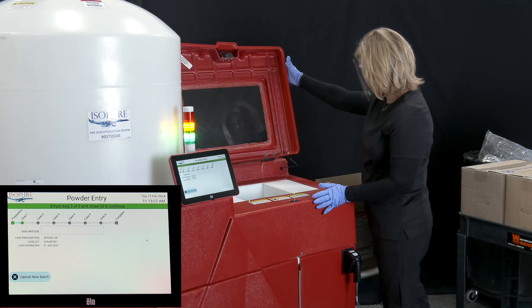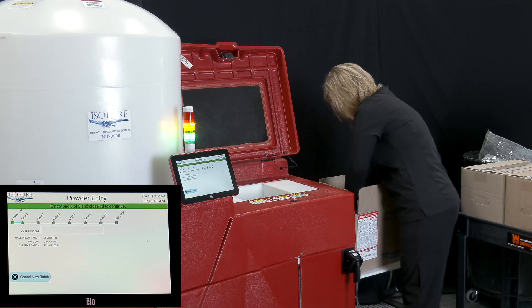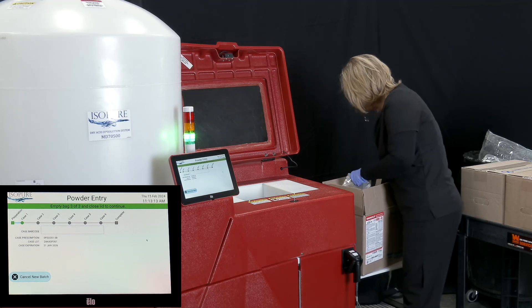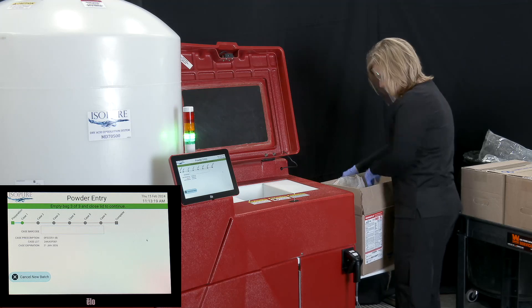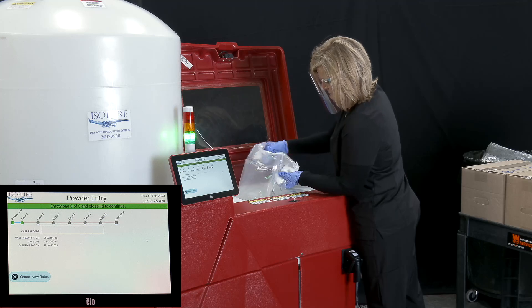Acumix counts the number of cases scanned as well as the number of times the lid is opened and closed. This helps to ensure that the correct number of dry acid bags are added and that the hopper is adequately rinsed between each addition.